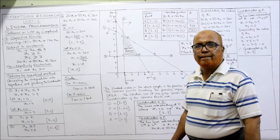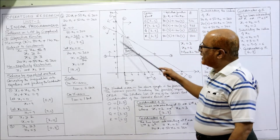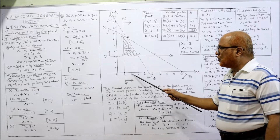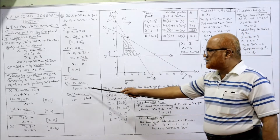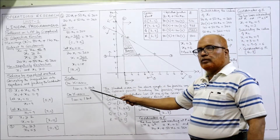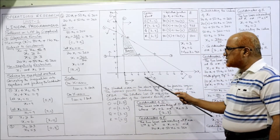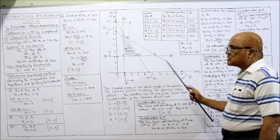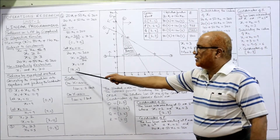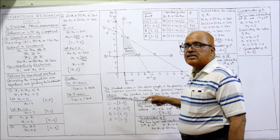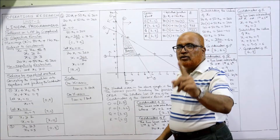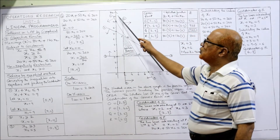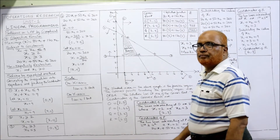Scale: on x-axis, 1 cm = 2 units, so markings go 2, 4, 6, 8 up to 18. On x2 (y-axis), 1 cm = 1 unit, so markings go 1, 2, 3, 4, 5, 6 up to 10.